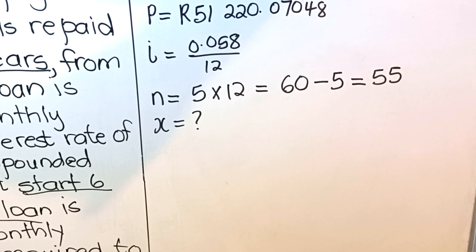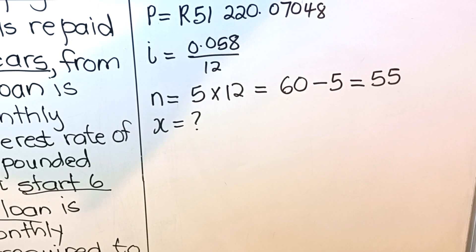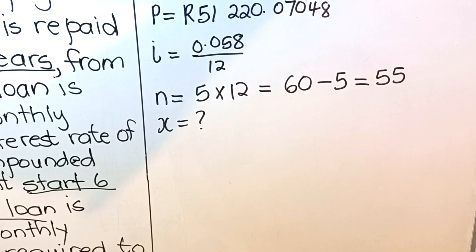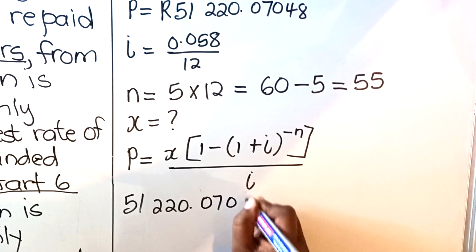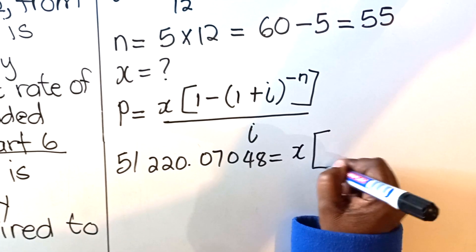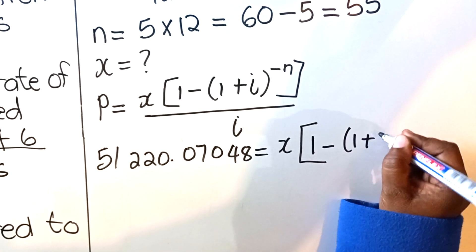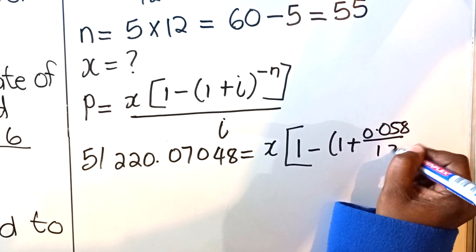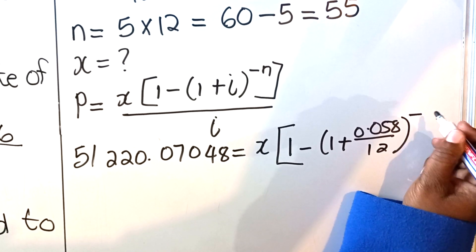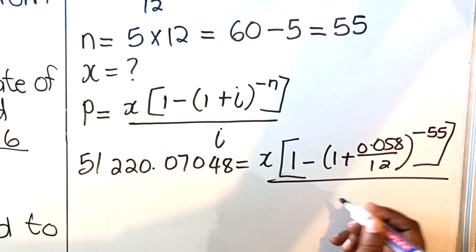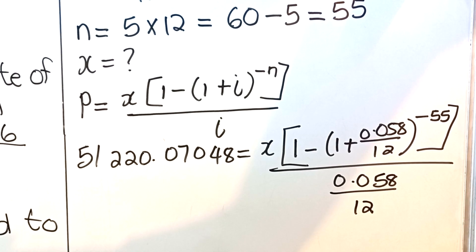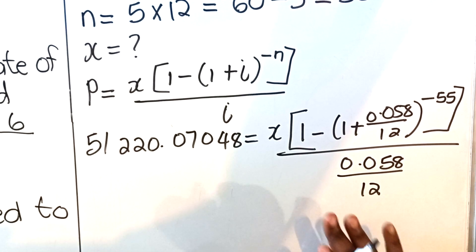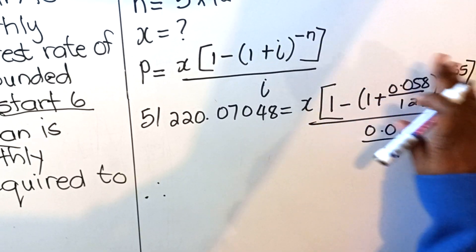We are calculating x, the monthly payment amount. Because it is a loan, it is a present value annuity. Go to your formula sheet and write the present value formula. Your P is R51,220.07048. x is what we are looking for. The formula is: P = x × [1 − (1 + i)^(−n)] / i. To solve for x, divide both sides by that bracket — you'll be left with x on one side.